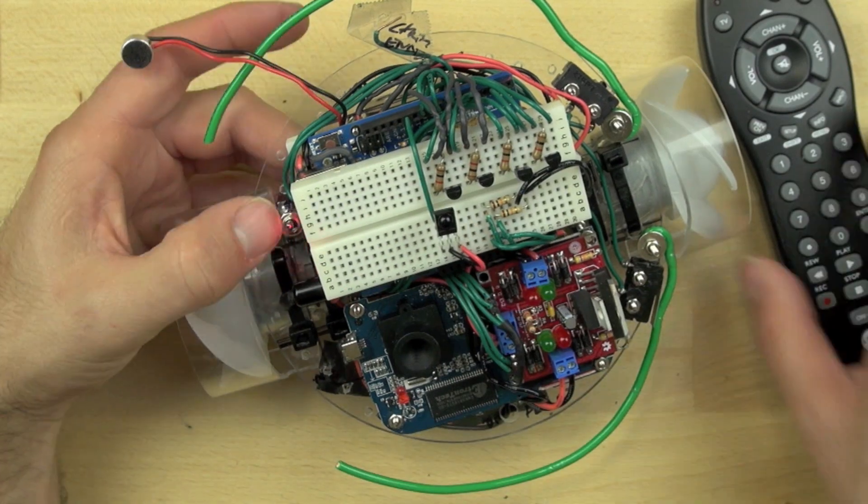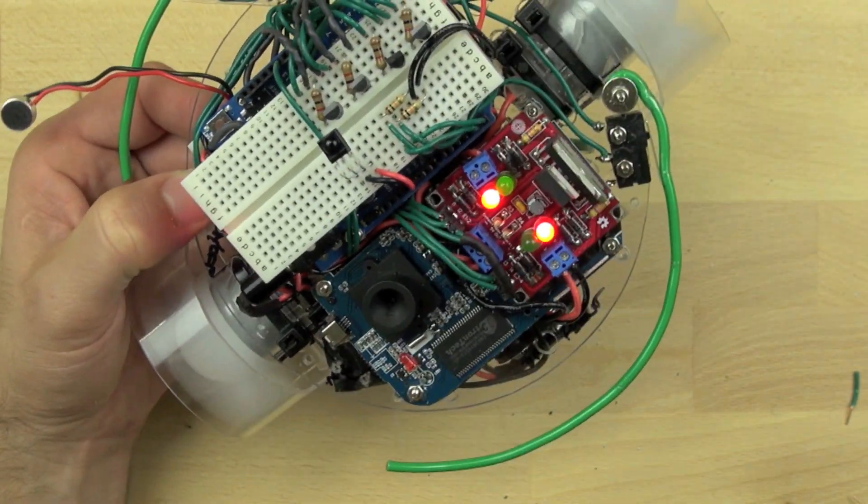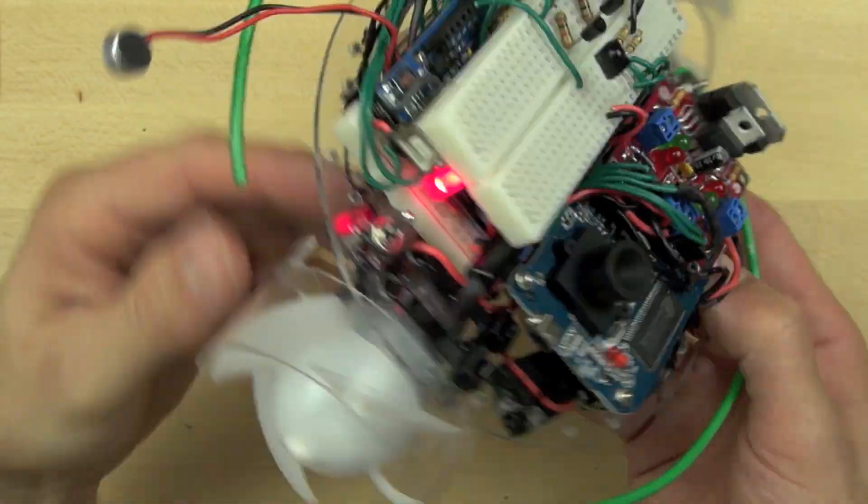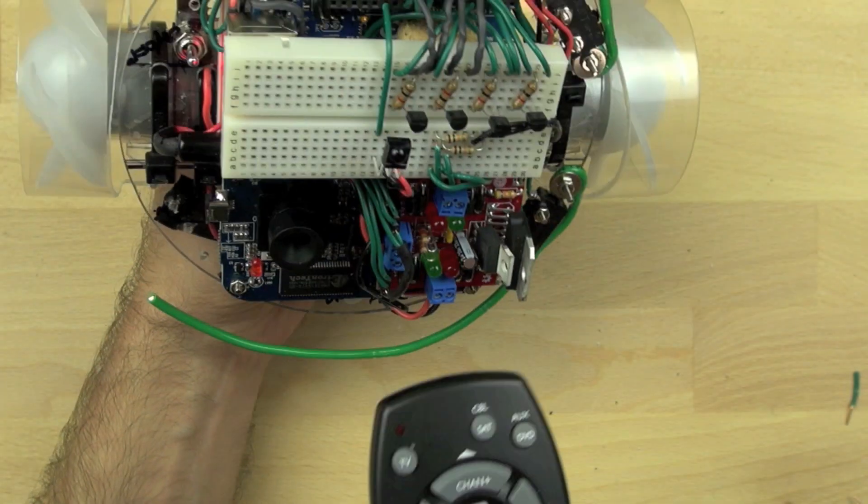Now we're going to test our module. We've already loaded some code, and we're going to push our forward button, and you can see it's running our motors there, so that's working. We'll provide the code in our videos that talk about the Arduino.